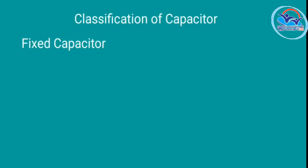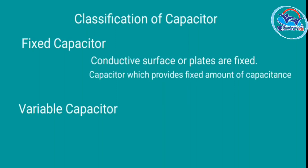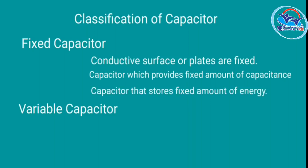The classification of capacitors: a capacitor can be classified into Fixed Capacitor and Variable Capacitor. A Fixed Capacitor has conductive plates that are fixed — they cannot be adjusted or moved. It provides a fixed amount of capacitance and stores a fixed amount of energy because the plates are fixed.